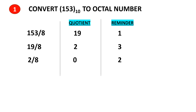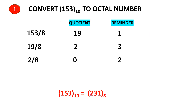From the remainder part we will get the answer. This forms the LSB, the least significant bit, and this forms the most significant bit. The answer should be written from bottom to top. So the octal equivalent of decimal 153 is 231.